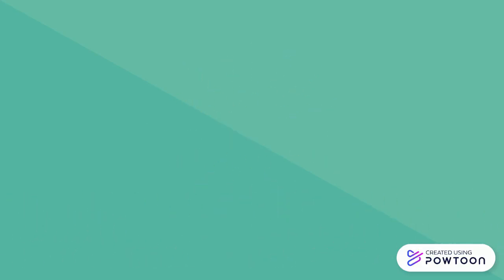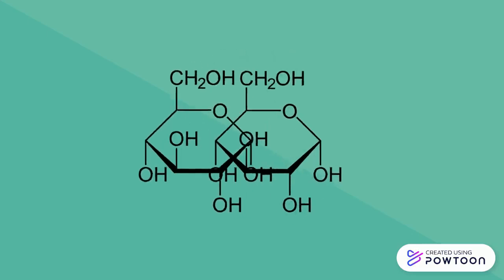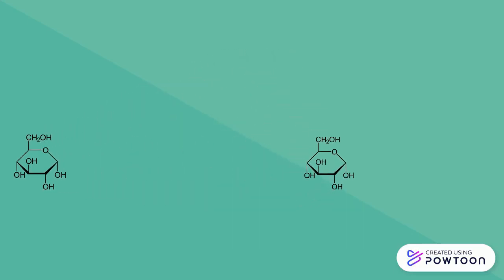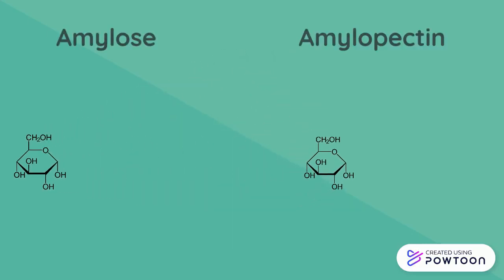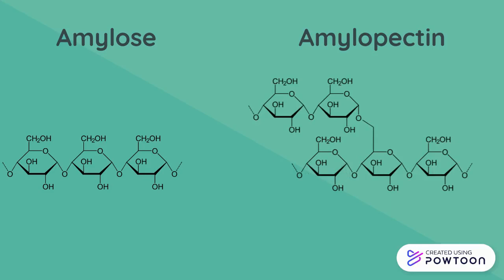When we connect a bunch of glucose molecules together, we get starch. There are two kinds of starch: amylose and amylopectin. Amylose is made when the glucose molecules link together in one spot only, which gives us a straight chain polymer. Amylopectin is made when glucose molecules link in two spots, which is how we get this branch structure.